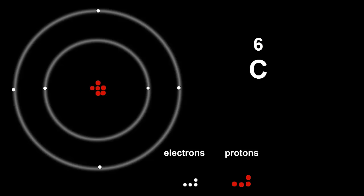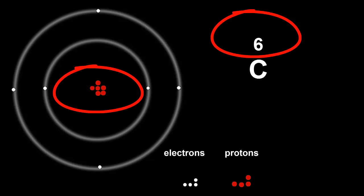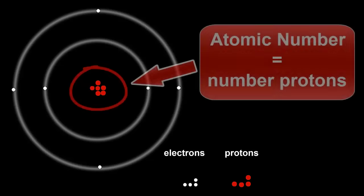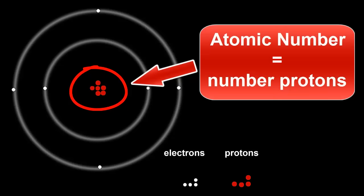Do you notice a pattern here? The number of the atom, its atomic number, is always the same as the number of protons in its nucleus. Earlier we learned that atomic number meant the place of an atom in the list of atoms, from the lightest to the heaviest. When scientists discovered these subatomic particles, they realized that atomic number was also exactly equal to the number of protons in the nucleus.